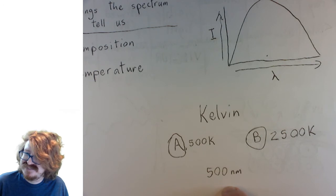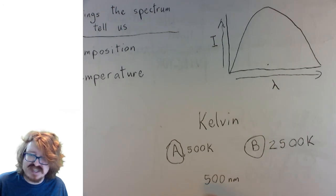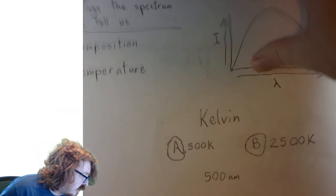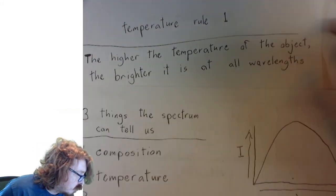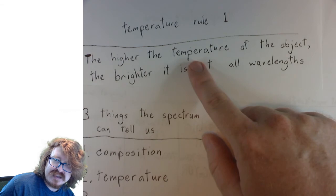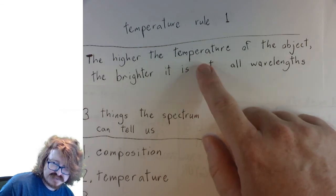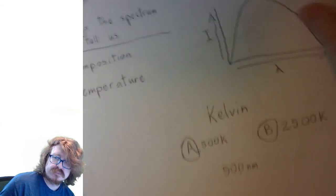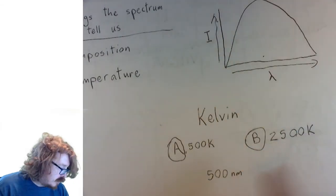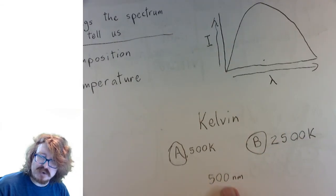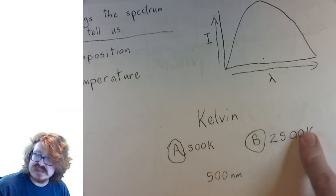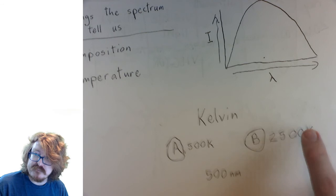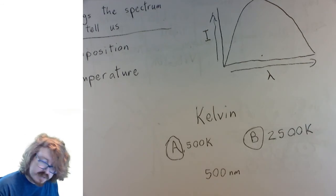You guys scared? Remember, what's the temperature rule? The temperature rule said that the hotter one will always be brighter at every wavelength. So no matter what wavelength I ask you about, the hotter one is always brighter. So this would be B, right? This would be B if that was a test question.